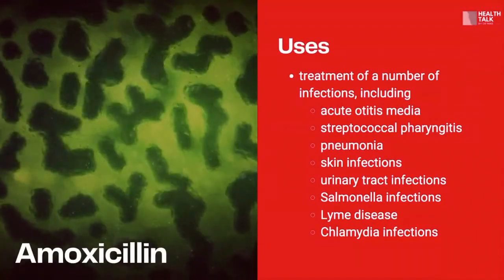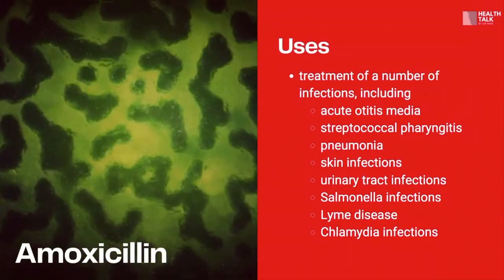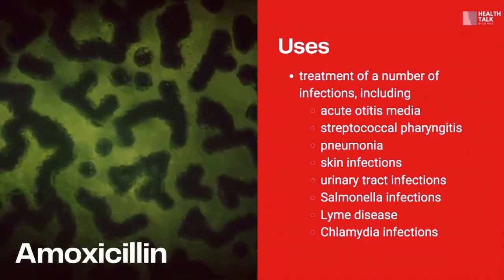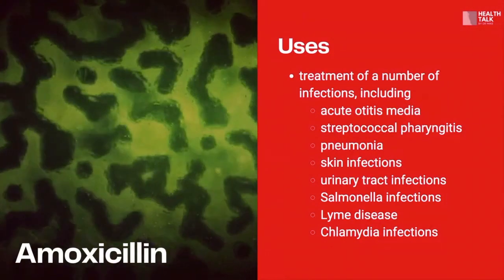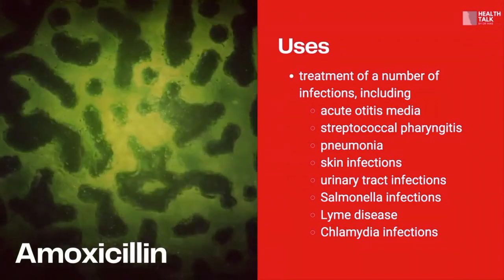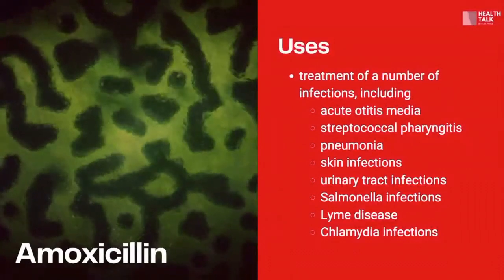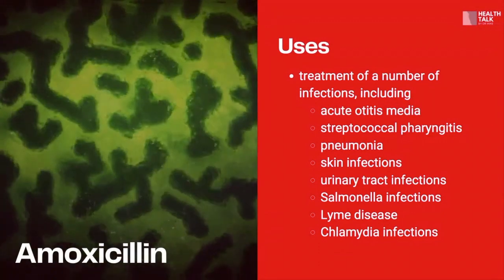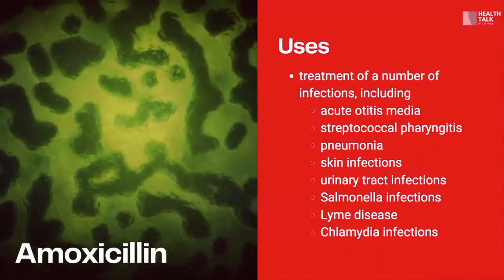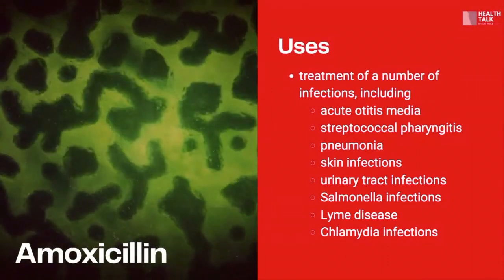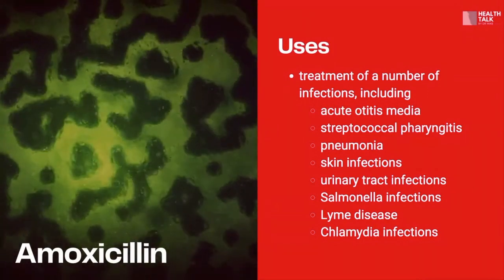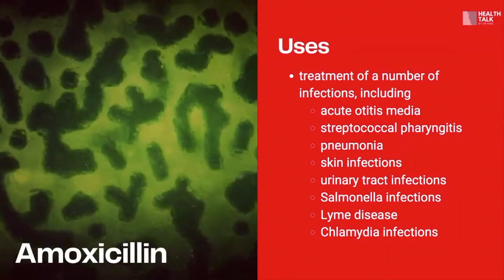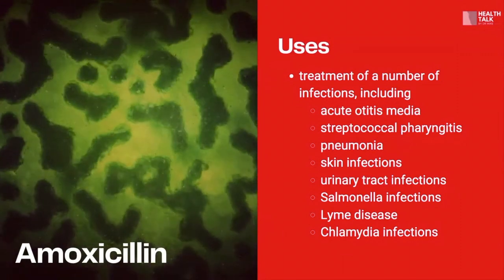Moving forward, how about the uses of this antibiotic? In terms of medical uses, amoxicillin is used in the treatment of a number of infections, namely: acute otitis media or inflammation of the middle ear, streptococcal pharyngitis, pneumonia, skin infections, urinary tract infections or UTI, salmonella infections, Lyme disease, and chlamydia infections. As shown in the illustrations, when a microorganism grows it would not stop replicating, but upon using amoxicillin it would kill the microorganism and stop replication.